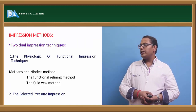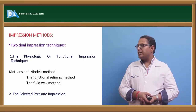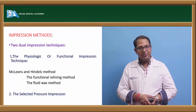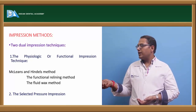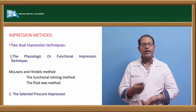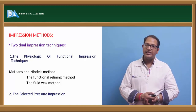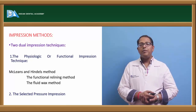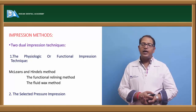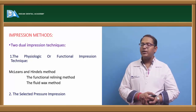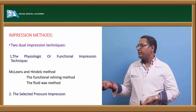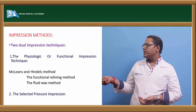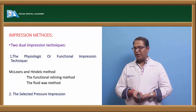Two dual impression method techniques exist: the physiological or functional impression method, and the selective pressure technique. The functional or physiologic impression technique has evolved with modifications over time: McLean was the first to develop a technique, then came Hindle's modification, then the functional relining method, and finally the fluid wax method. We also have the selective pressure impression technique. These are the different methods advocated for dual impression technique.